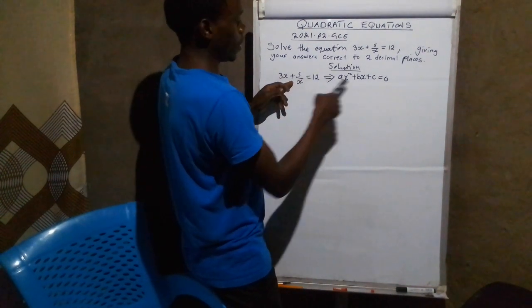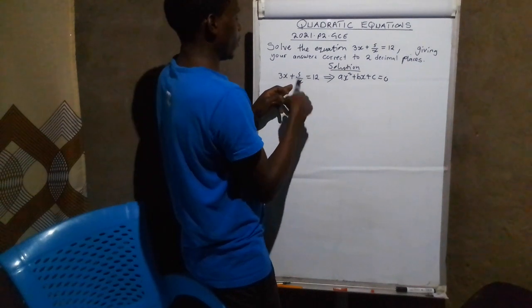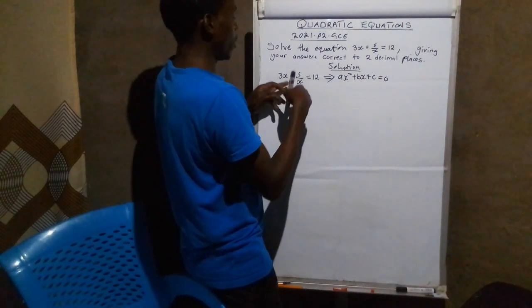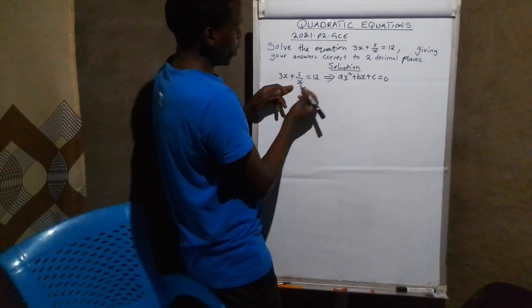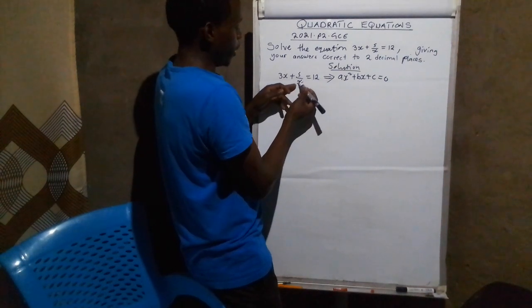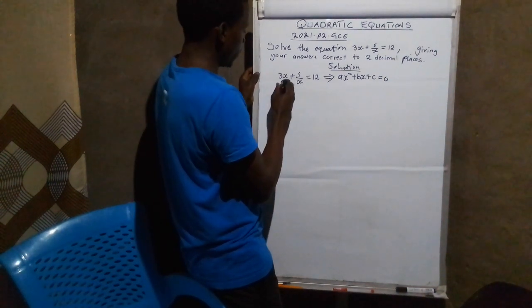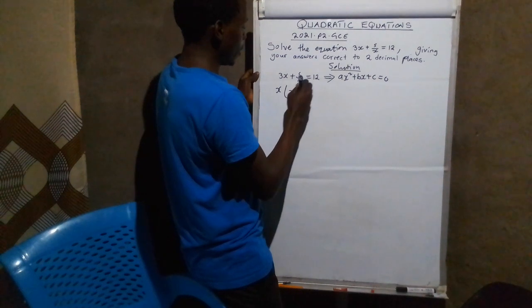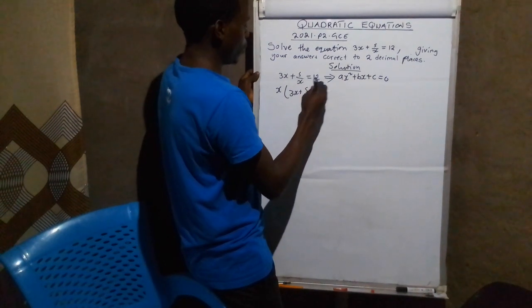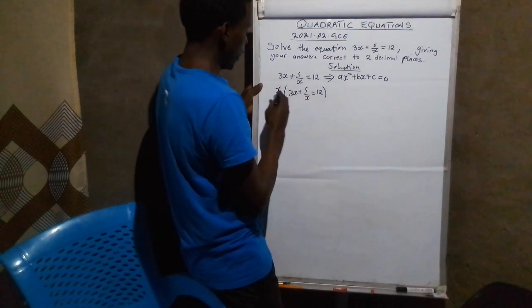Since we have a fraction there, we are going to work out of this fraction. We kill this fraction. How do we kill this fraction? You multiply throughout by the denominator. Here is x. So it will be x multiplied by everything: 3x plus 5 over x equals to 12.